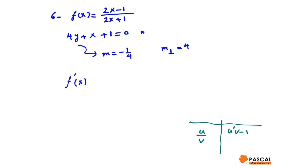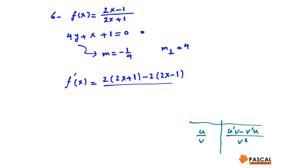The derivative of u over v is u prime v minus v prime u over v squared, when u and v are functions of x. Therefore f prime of x is 2 times 2x plus 1 minus 2 times 2x minus 1, all divided by 2x plus 1 to the power of 2.